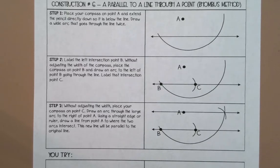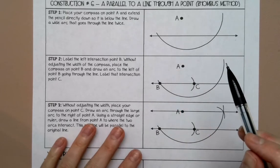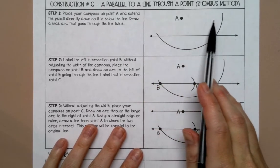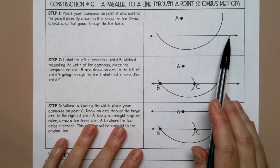Welcome to this lesson on constructing a parallel to a line through a point using the rhombus method. You're going to be given a line and one point, and you want to draw a parallel line through that point to the other line.